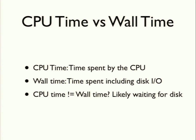CPU time and wall time — CPU time is time spent by the CPU. Wall time is time spent by the CPU plus time spent with disk IO. So if CPU time and wall time don't match and there's a discrepancy there, there's a good chance that you're waiting for the disk — waiting to write or read a file somewhere.